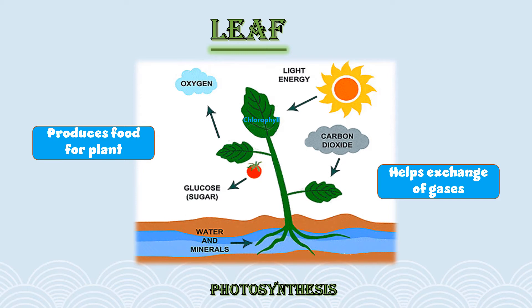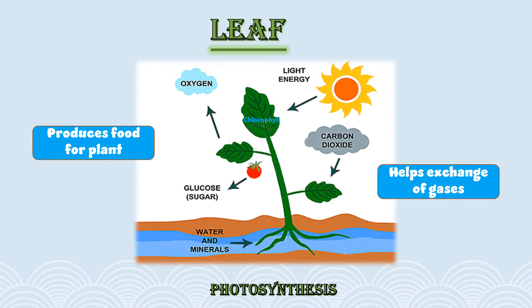Leaves exchange gases with the help of photosynthesis. Let's understand the process of photosynthesis by which leaves prepare food for the plant. 'Photo' means light and 'synthesis' means to make — so photosynthesis is the process used by leaves to prepare their food by converting light energy into chemical energy. Chlorophyll, which is the green pigment in plant leaves, captures sunlight and aids in photosynthesis.